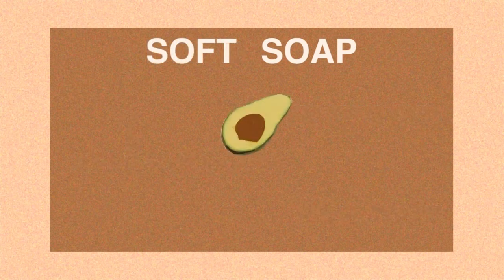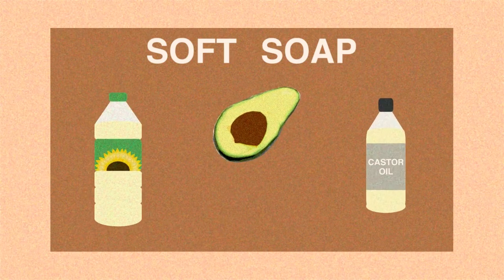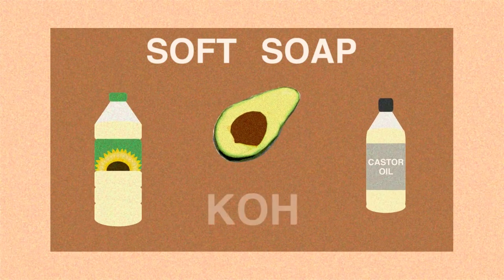Soft soaps use fatty acid esters like avocado oil, sunflower oil and castor oil to name a few, and are reacted with potassium hydroxide when saponified.